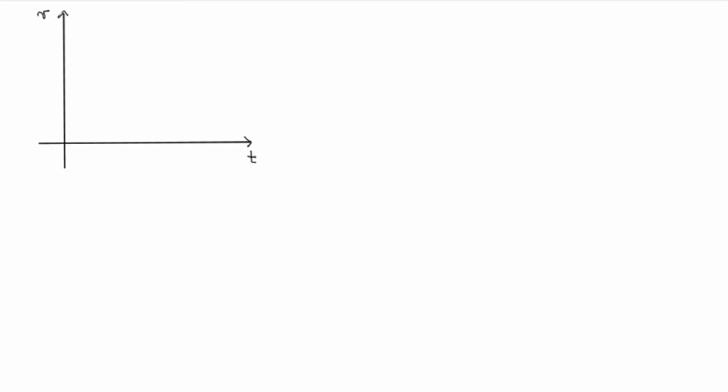Let's start with a very simple case. Suppose that I have an object moving at constant velocity. If I sketch the graph of the velocity function, I'll get something very simple — just a horizontal line corresponding to v(t) equals a constant, say capital V. What I'm interested in is calculating the distance traveled between two times, say t₀ — one hour after the start — and capital T, which could be something like three hours after the start.